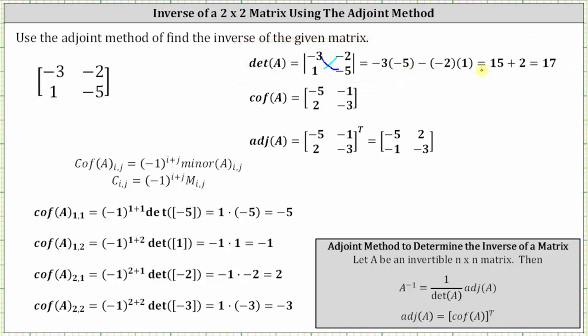Next, we need to find the cofactor matrix, which means we have to find the cofactor for each entry in the 2 by 2 matrix. The cofactor of A sub i comma j is equal to negative 1 raised to the power of i plus j times the corresponding minor. To find the corresponding minor, we eliminate row i and column j and find the determinant of the resulting matrix.